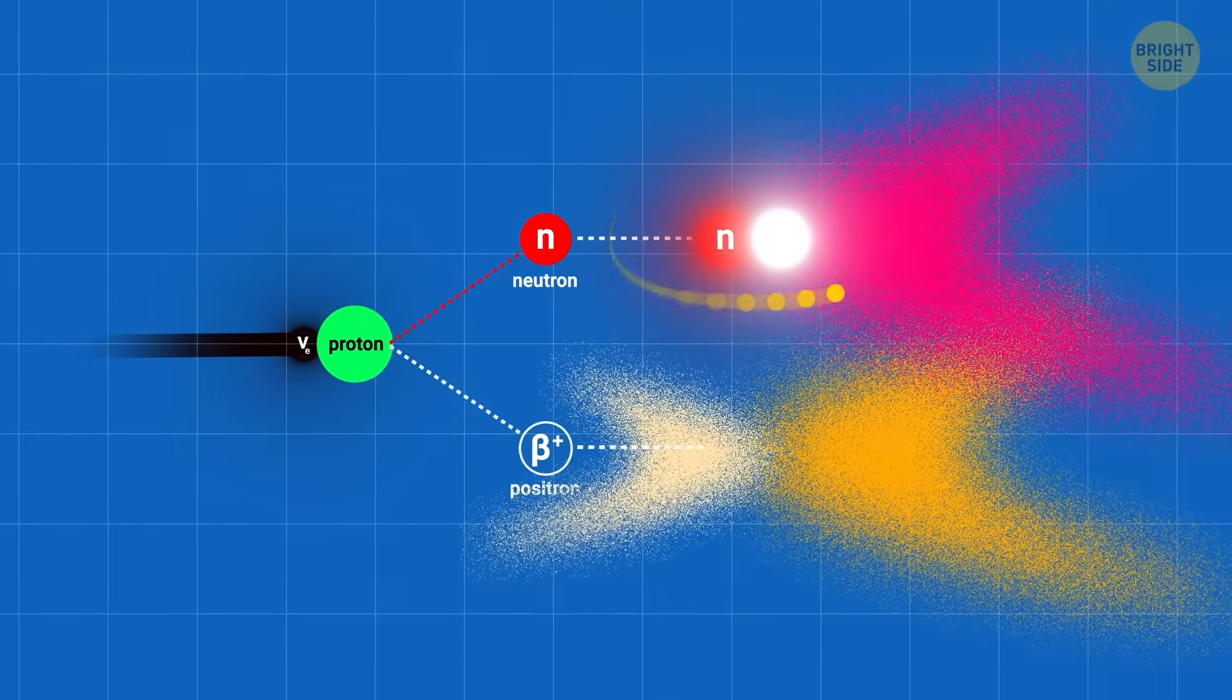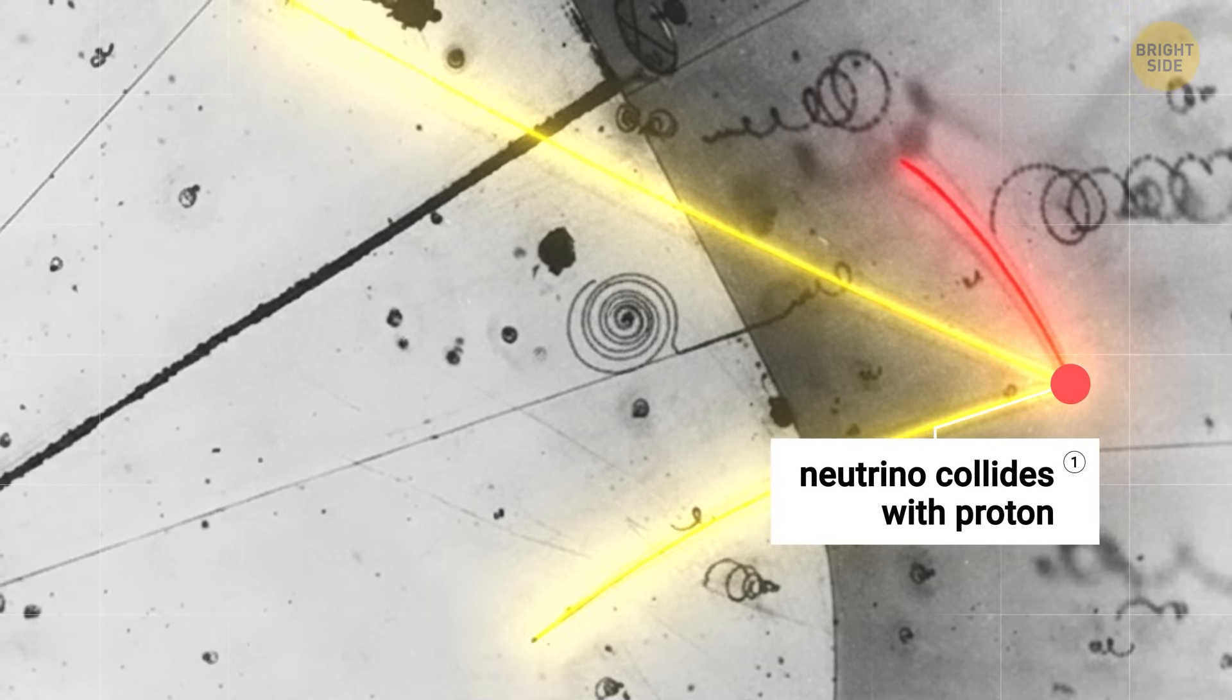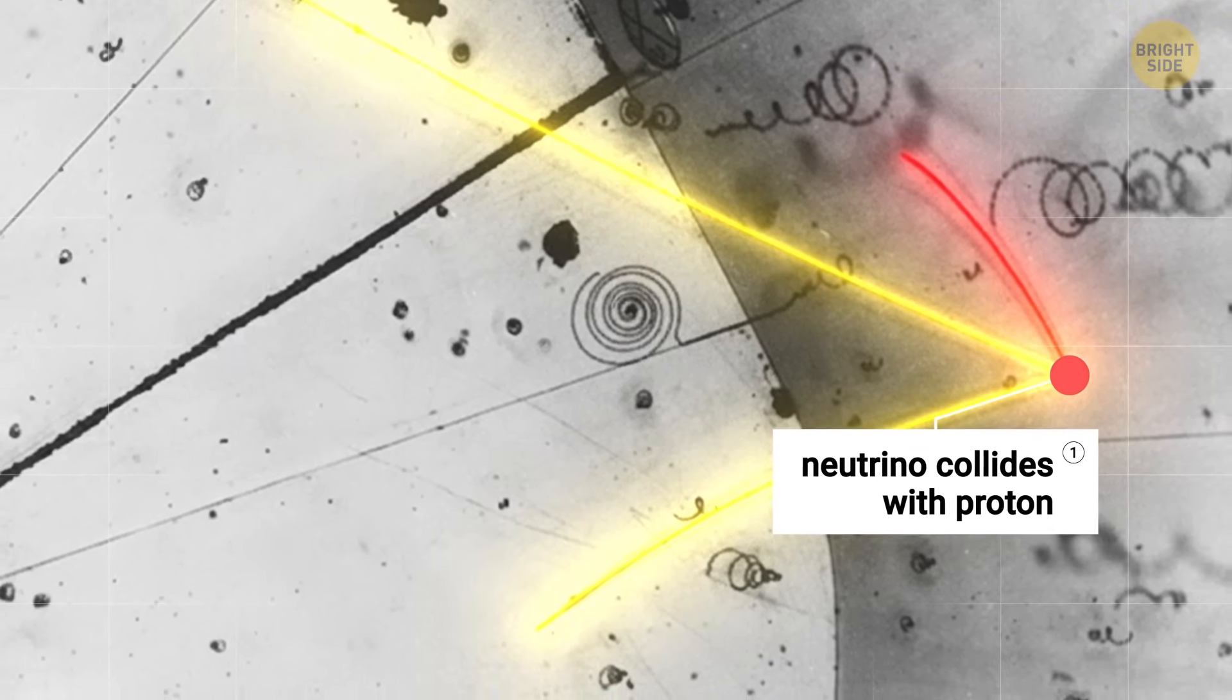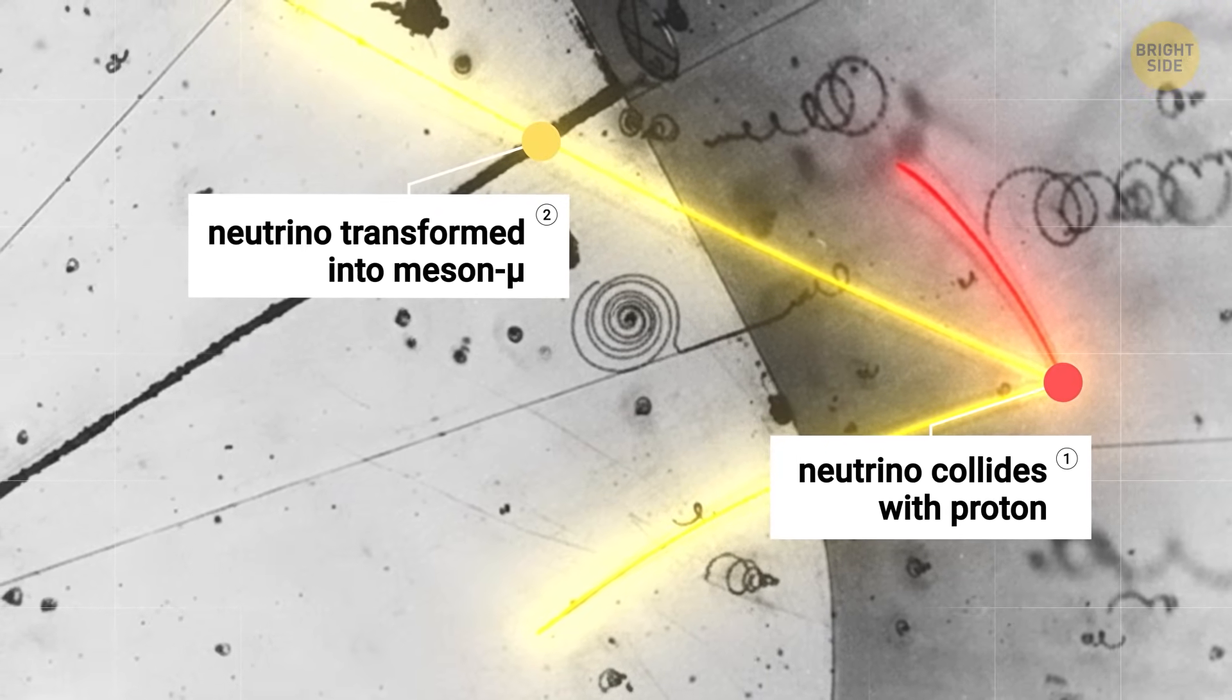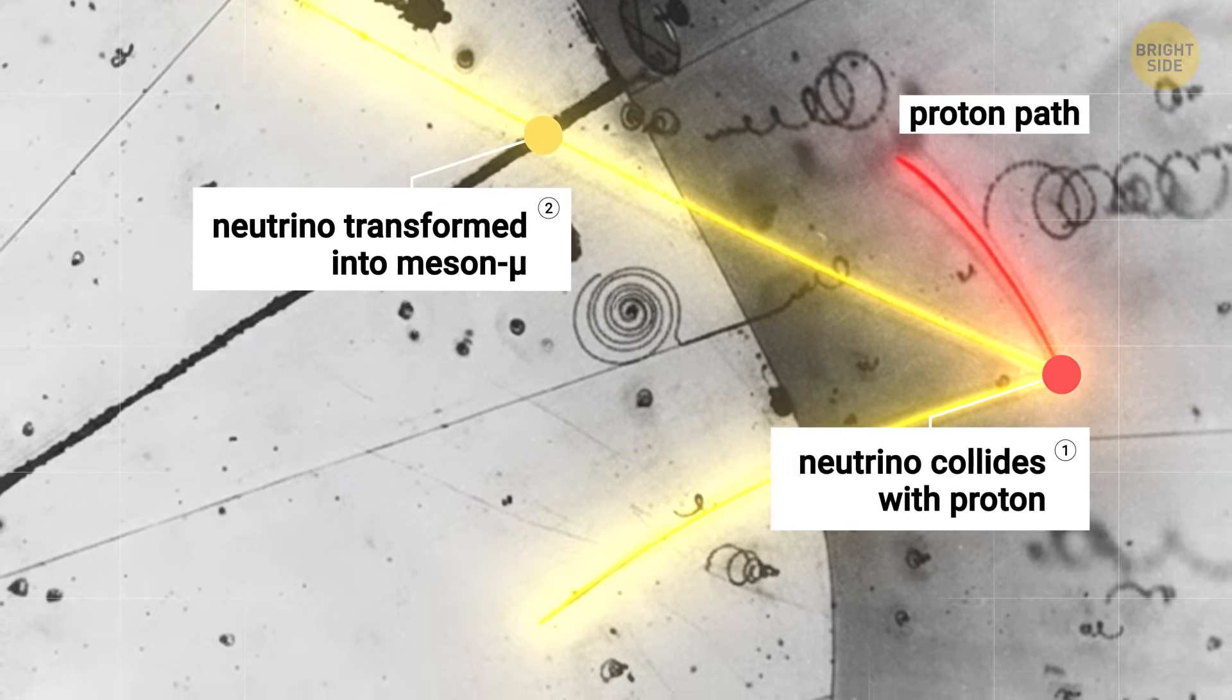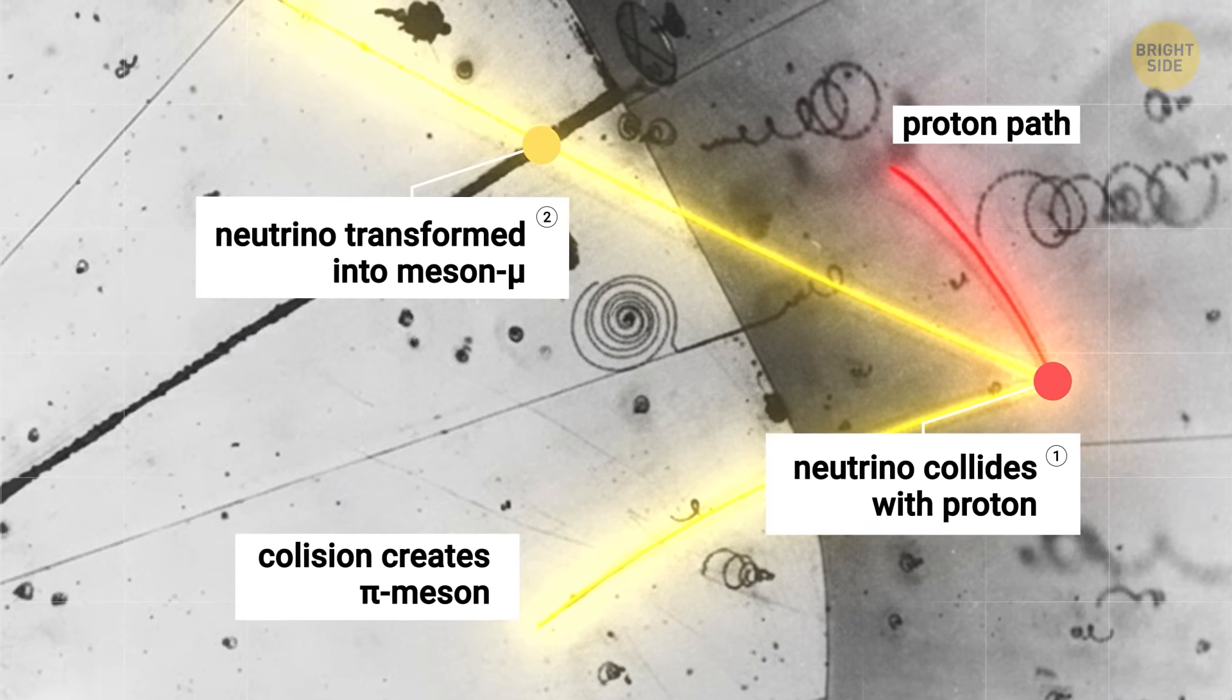releasing another burst of light. These two bursts of light, the first from the positron and the second from the neutron, are the key signal that a neutrino interaction has occurred. And that time gap between the two bursts helps scientists distinguish genuine neutrino signals from other background events, like cosmic rays.